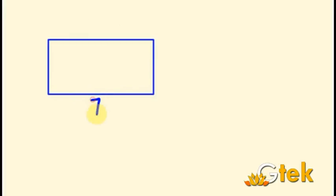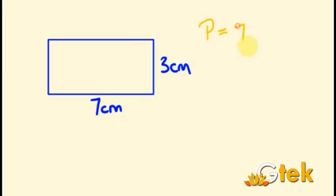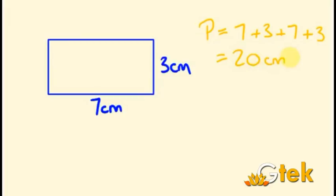Say for example, a rectangle with length 7 and width 3 in centimeters. How will we identify the perimeter of this rectangle? The perimeter P is equal to length 7 plus width 3 plus length 7 plus width 3, as it has 4 sides. So the total is 20 centimeters. This is one way of identifying the perimeter of this rectangle.